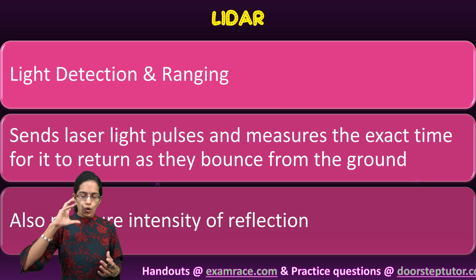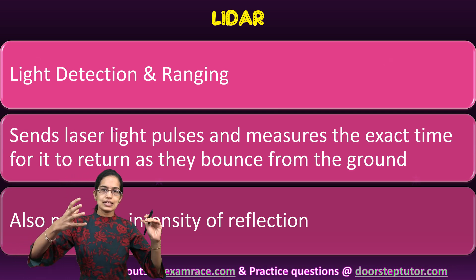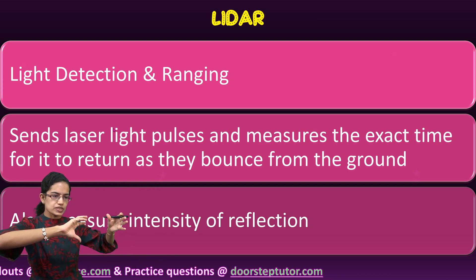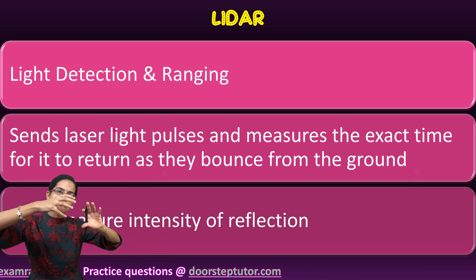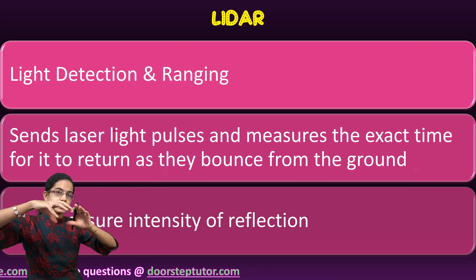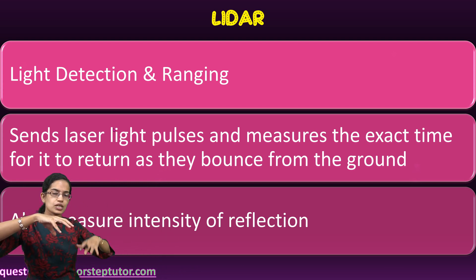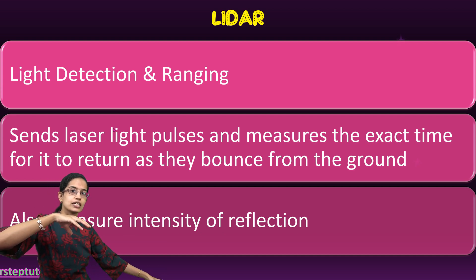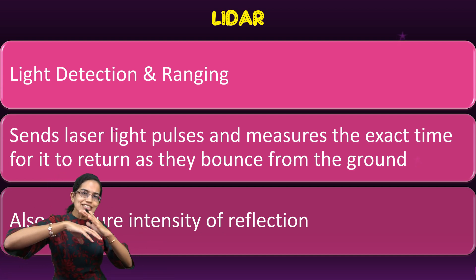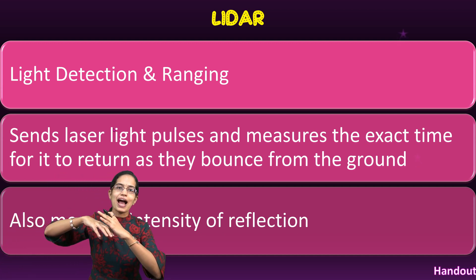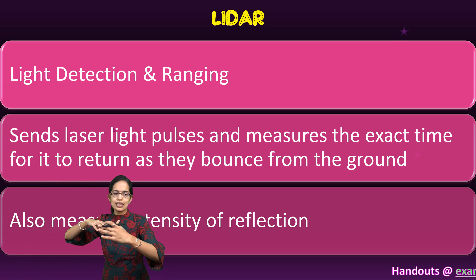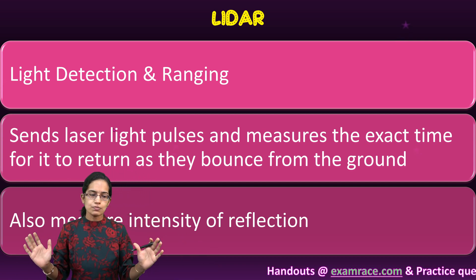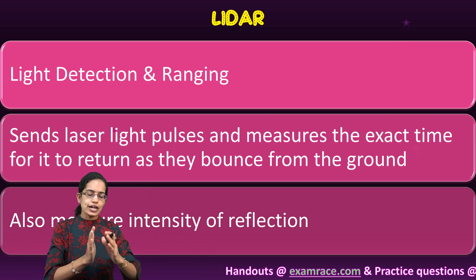In a LIDAR system, there are oscillating mirrors that send out the laser beams. These laser beams strike the ground and reflect back, giving a kind of sheet of light.